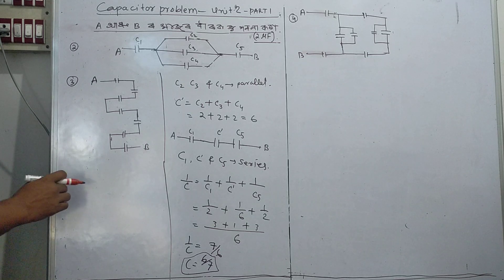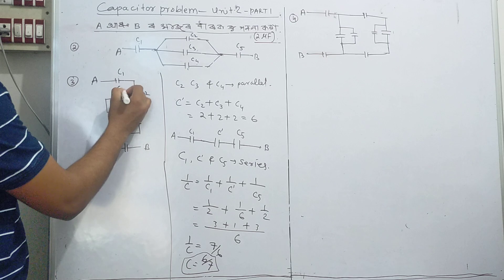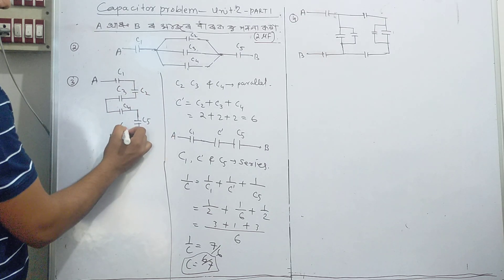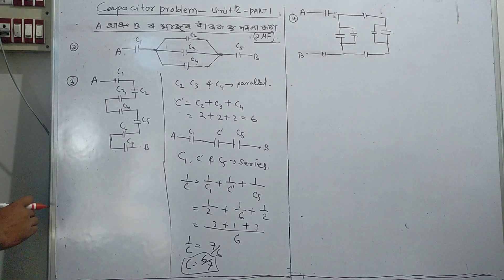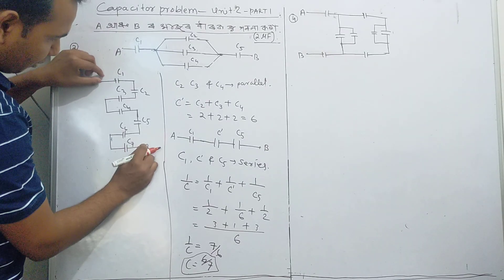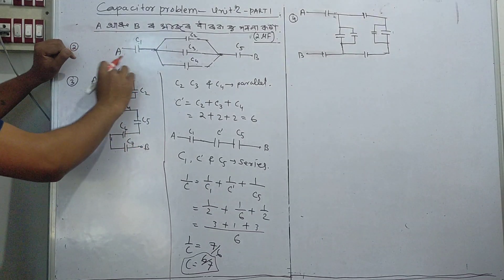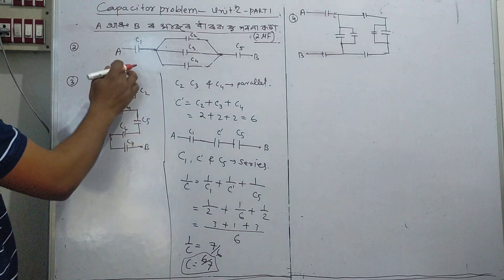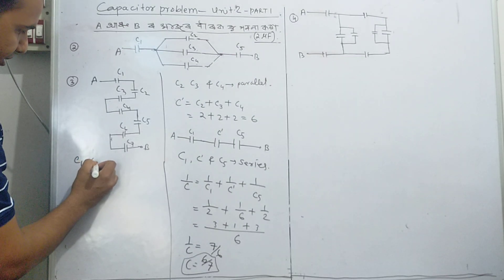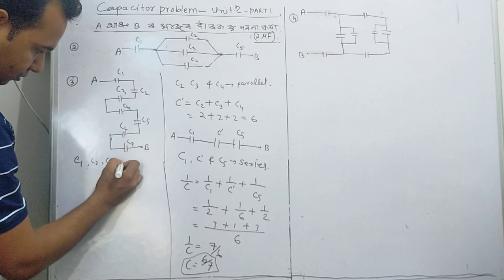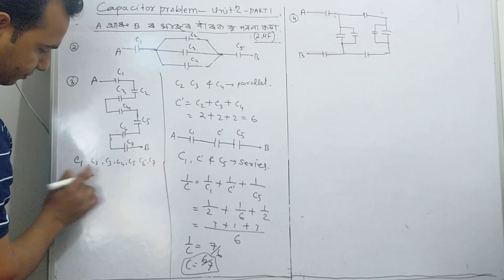Now the number problem: the answer involves C1, C2, C3, C4, C5, C6, and C7. We have C1, C2, C3, C4, C5, C6 and C7 in series.